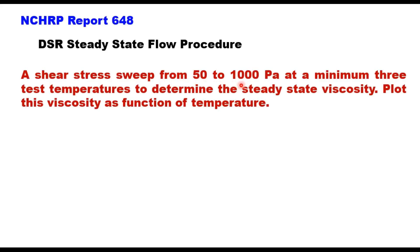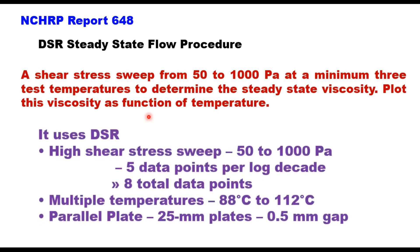The second method is the DSR steady state flow procedure. Here, a shear stress sweep from 50 to 1000 Pascal at a minimum of three test temperatures is carried out to determine the steady state viscosity. This uses a Dynamic Shear Rheometer (DSR), with the shear stress sweep performed at stress levels from 50 to 1000 Pascal, taking five data points per log decade. At each stress level, eight total data points are taken at multiple temperatures from 88°C to 112°C, with a minimum of three test temperatures. A plate size of 25 mm with a gap of 0.5 mm is recommended.